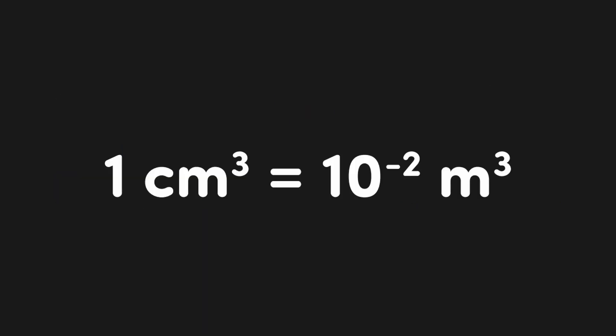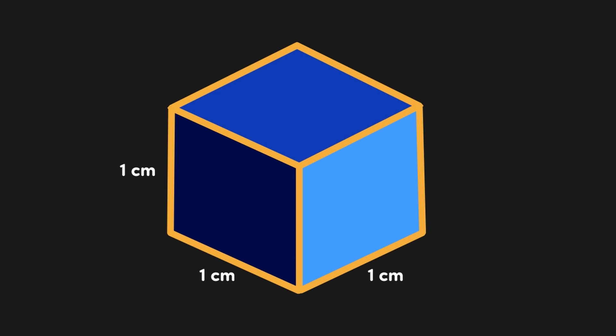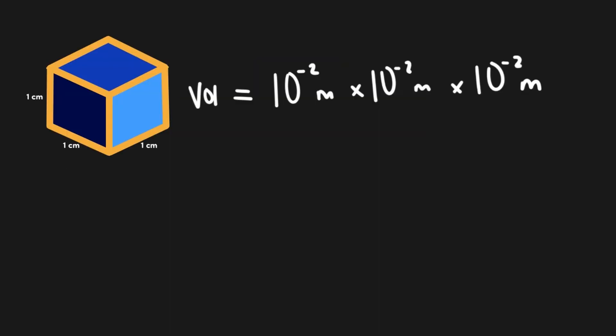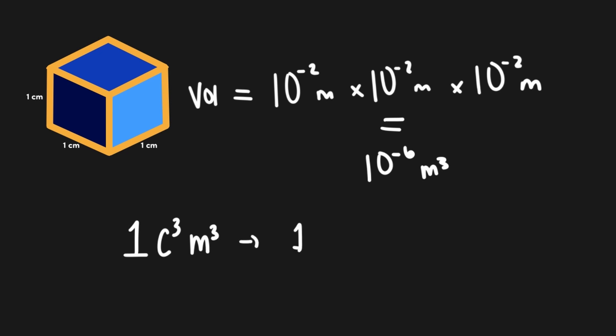Before wrapping up, let's cover one more SI prefix concept: what happens when we cube or square an SI prefix value? For example, what does 1 centimeter cubed equal in meters cubed? Many people would say 10 to the negative 2 meters cubed — but this is wrong. Consider a cube with volume 1 centimeter cubed: each side is 1 times 10 to the negative 2 meters. Multiplying all three sides gives 10 to the negative 2 times 10 to the negative 2 times 10 to the negative 2 meters, or 10 to the negative 6 meters cubed. We not only cube the meters but the centi value too. So 1 centimeter cubed equals 1 centi-cubed times meter-cubed, which is 10 to the negative 6 meters cubed.